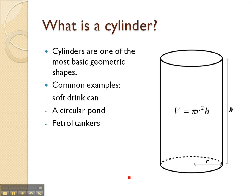So to begin with, what is a cylinder? A cylinder is one of the most basic geometric shapes. Common examples would be soft drink cans, a circular pond, a petrol tanker, and toilet roll tube. Any tube with a circular face and a length or a height to it is a cylinder.